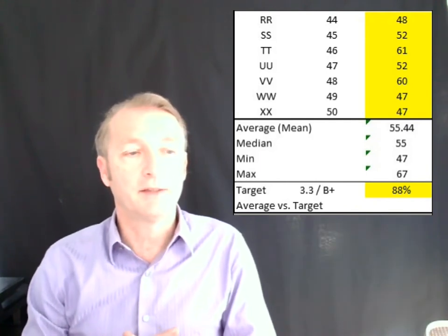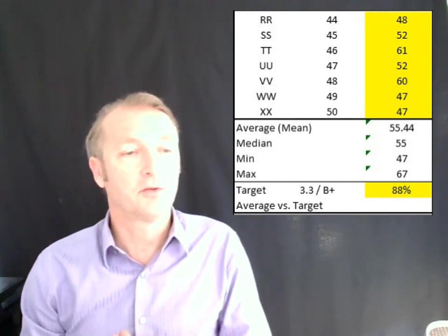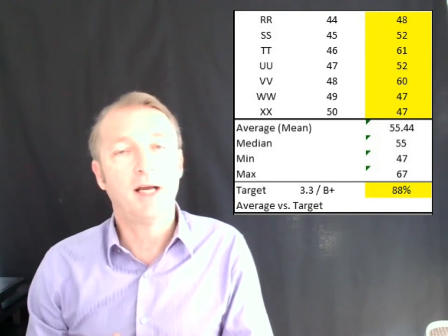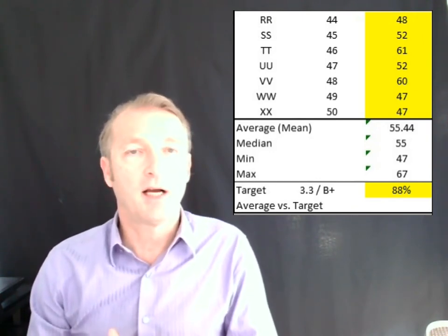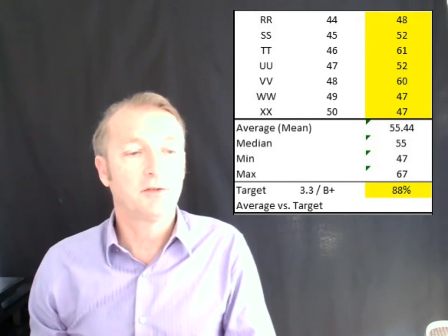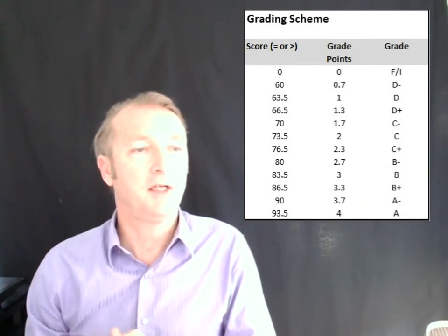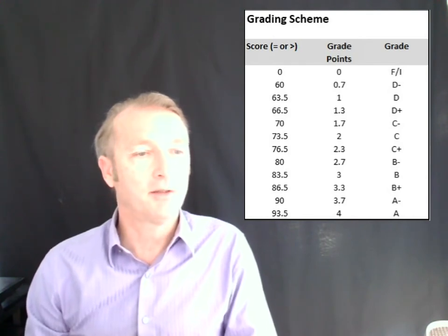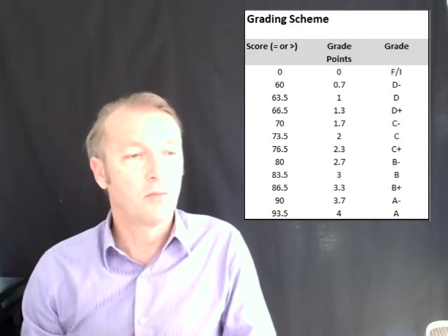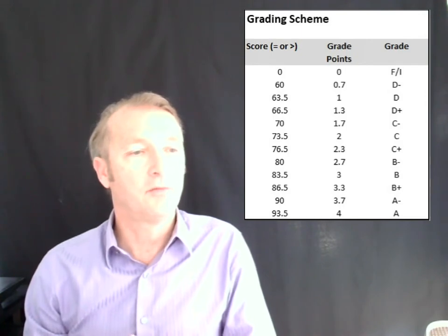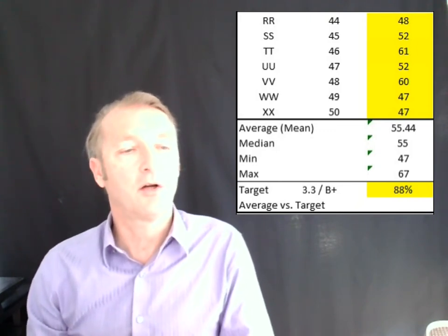In order to curve the grades, you have to have a target to curve against. For the school I'm working for, we have a policy that we should hit 3.3 or a B-plus as the average grade. Looking at the grade policy, a B-plus starts with 86.5 and ends at 90. So I set a target score of 88%, and that's what you can see at the bottom of the column.